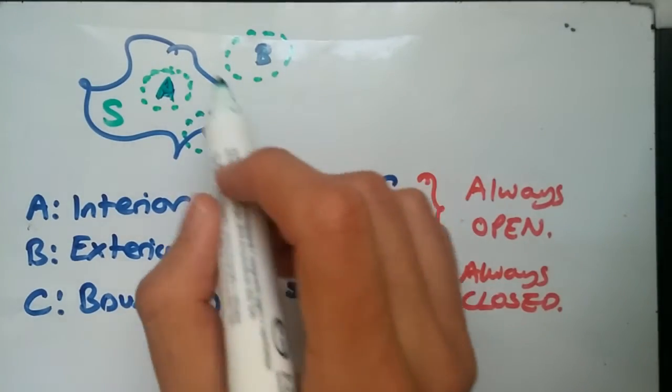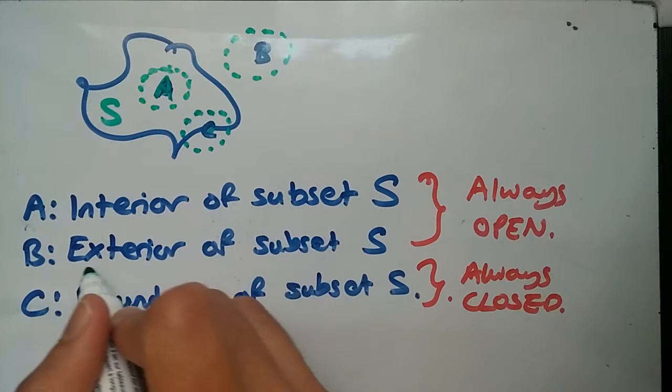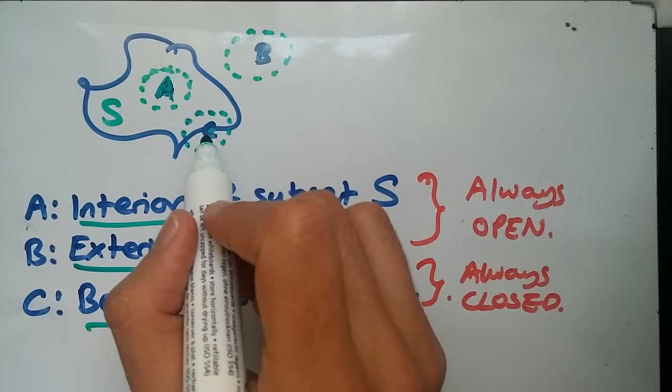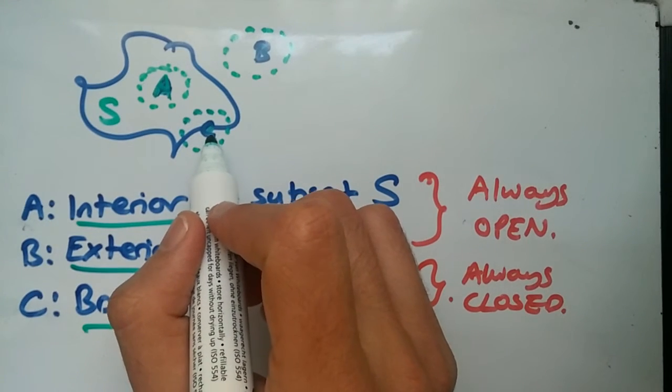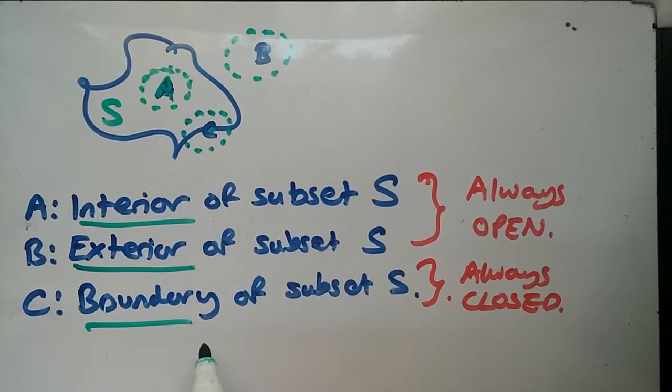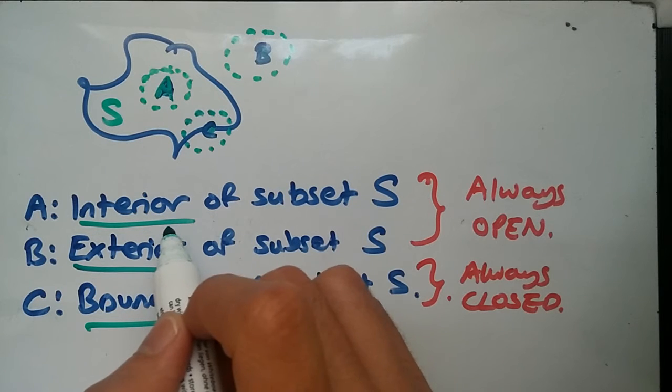Likewise for the exterior, it has to be outside the map S, outside the subset. Lastly, the boundary. The boundary is simply the point where it's on the line, on the subset at the edge of it. Normally this would be equal to a set equation. Interior would be within it and exterior would be the opposite sign of the interior.